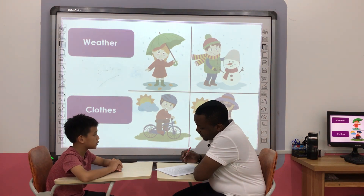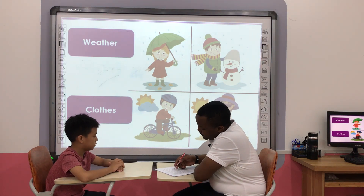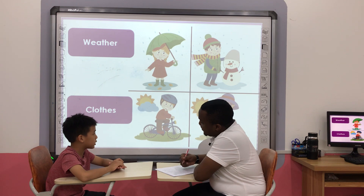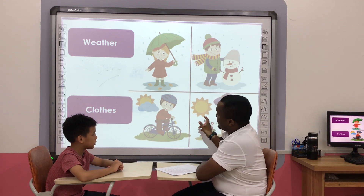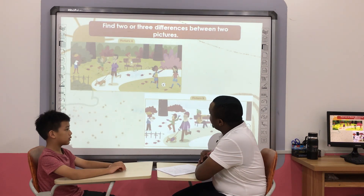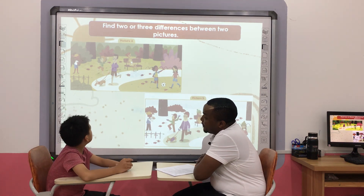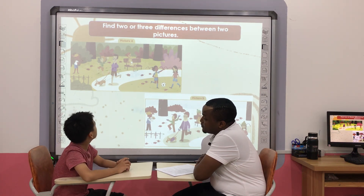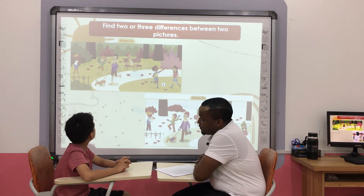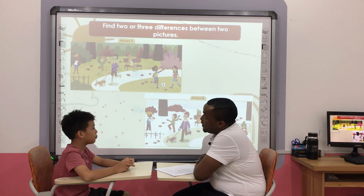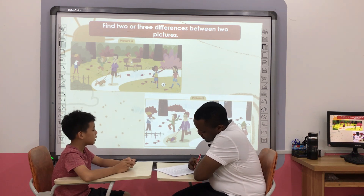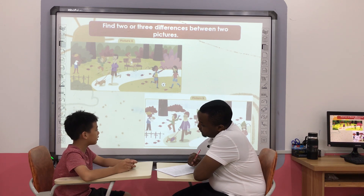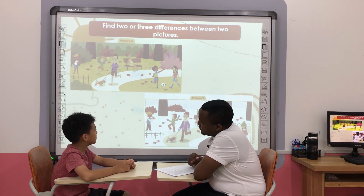Jacket. Jacket, okay. Next one — can you find the difference between the two pictures? In picture A, the child is wearing red.